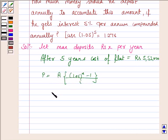P is the principle, i is the rate of interest which is given to be 5%, and n is the number of years which is given to be 5 years.